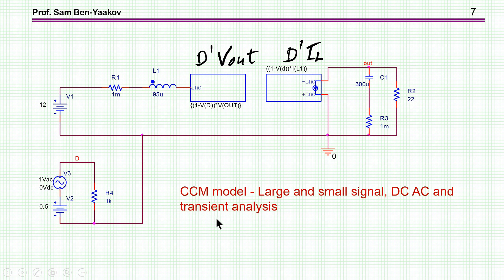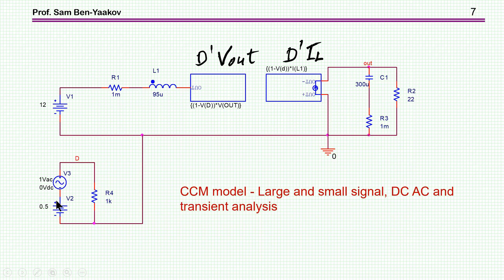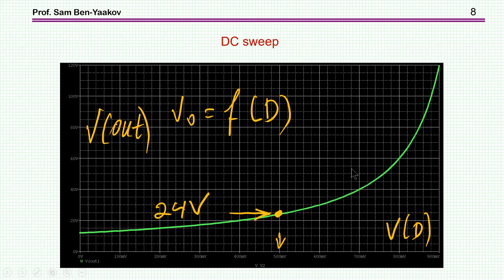This is a CCM model for large and small signal and it is DC, AC and transient analysis compatible. As I have said, with some addition we can make it compatible with both CCM and DCM. And just to show the performance of this model in DC analysis, I've put here a DC source here which is changing from 0 to 0.9, and I'm looking at DC at the output. We know that the output is 1 over D off, and this is the curve here. The duty cycle is coded into voltage, so 500 millivolt is 0.5, and since the input is 12 volt with a duty cycle of 0.5, the off is 0.5, we get 24 volts. So everything is fine.